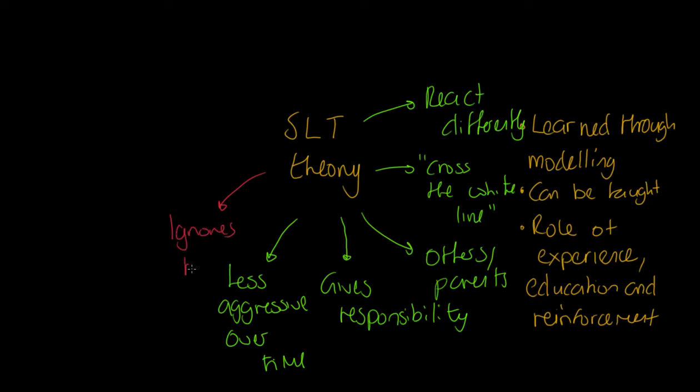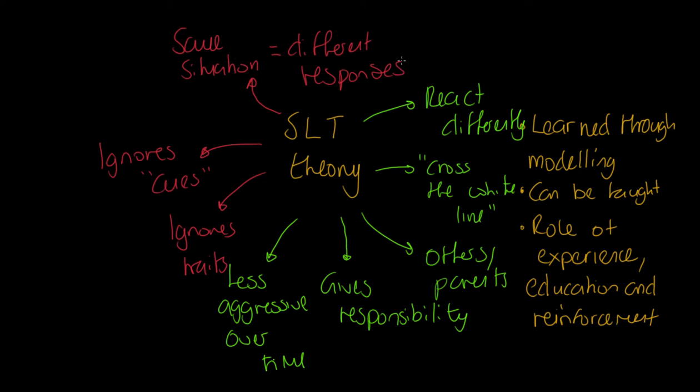Weaknesses of this model: it ignores traits. Is there an argument that traits play a role? It doesn't state specifically which cues in the environment might lead to aggression. Now we're going to look at another model that does that. It doesn't consider why people do different things in the same situation. We might get the same situation and different responses. That is harder to explain with social learning theory. You could argue that people have different types of social learning that could explain that.